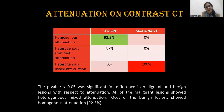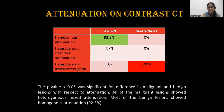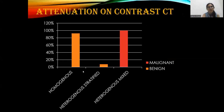Regarding attenuation on contrast CT, the p-value was less than 0.05, meaning it was statistically significant for the difference between malignant and benign lesions with respect to attenuation. The majority of benign lesions showed homogeneous attenuation, while in malignant lesions we saw heterogeneous mixed attenuation. The bar chart confirms homogeneous attenuation in benign conditions versus heterogeneous mixed attenuation in malignant lesions.